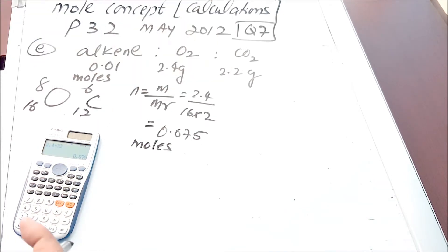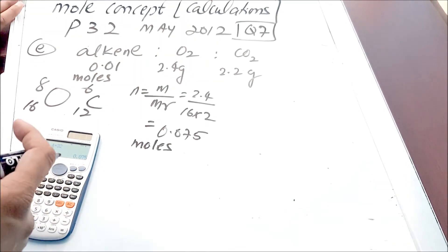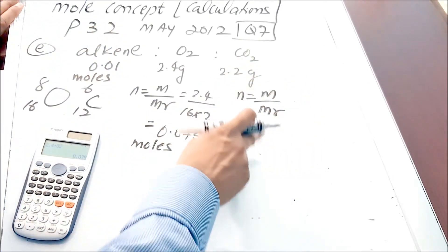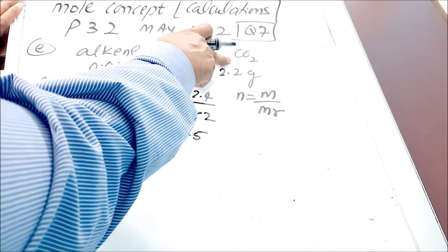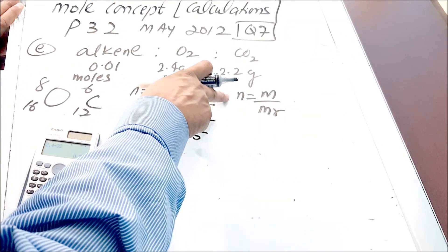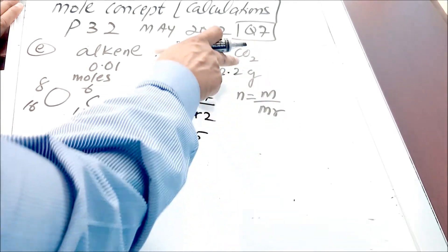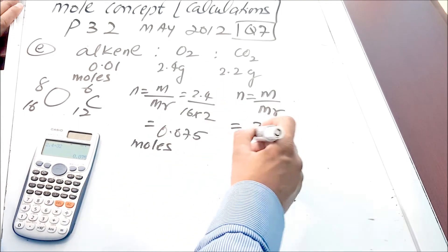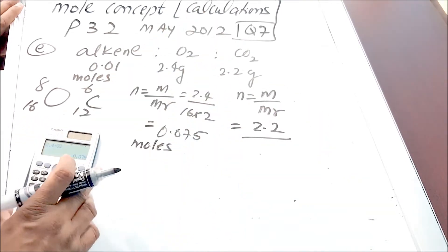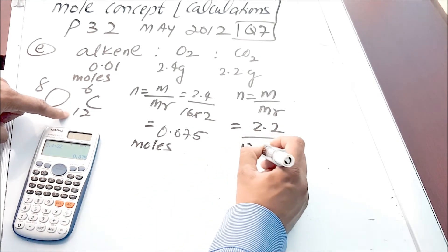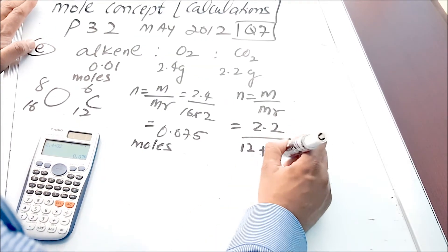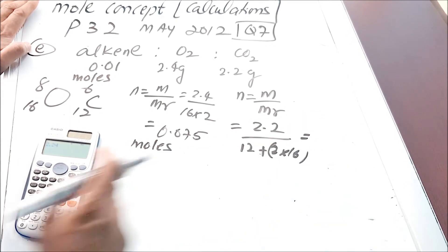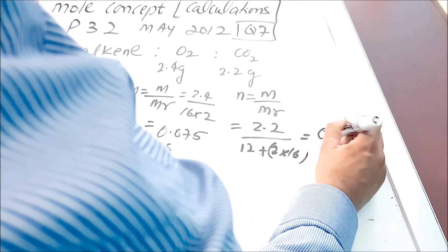Similarly, find the moles of carbon dioxide. The formula is again M/MR — that's the formula to find moles of a molecule. If you're working with an atom, the formula becomes N = m/AR. Since CO₂ is a molecule, we use MR. The mass of CO₂ is 2.2, and the MR of CO₂ is: carbon AR = 12 plus 2 × 16 = 44. So 2.2 ÷ 44 = 0.05 moles.